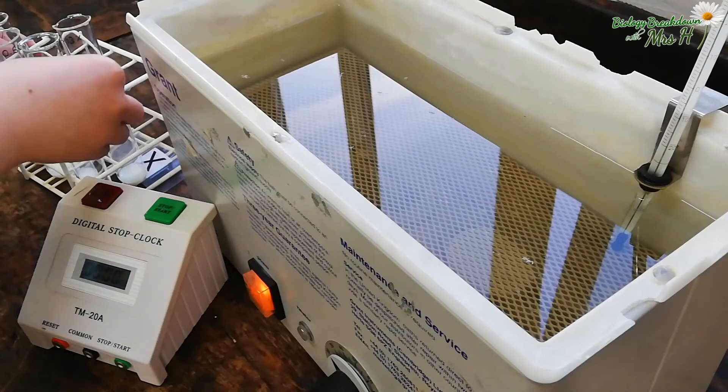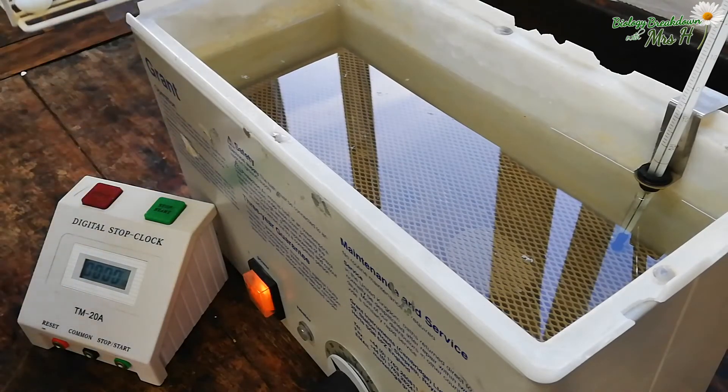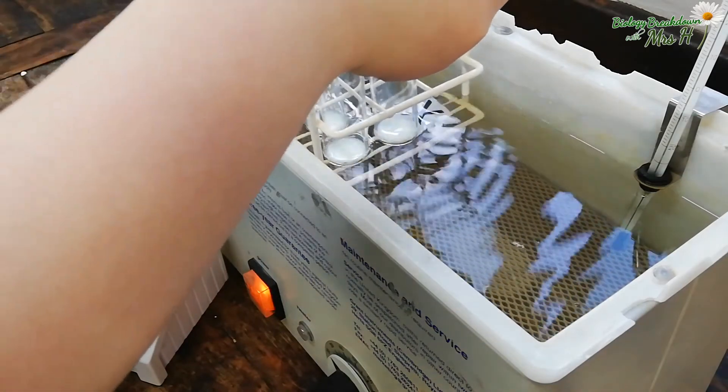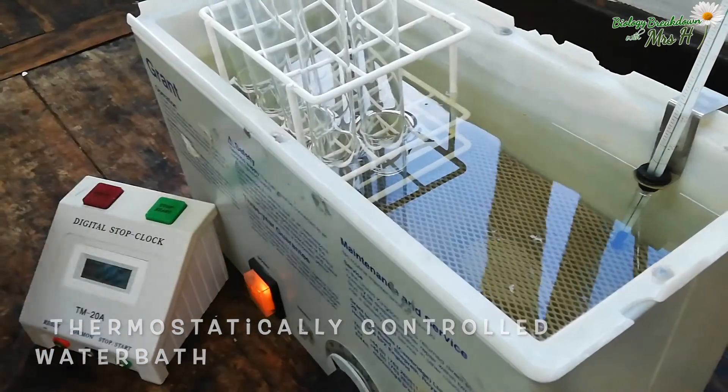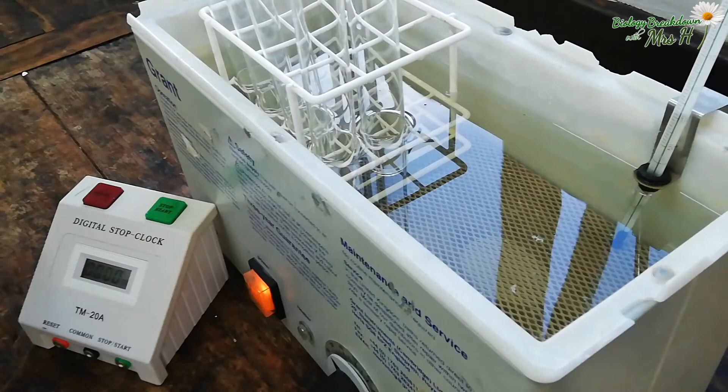The temperature of the reaction needs to be controlled so we'll place the tubes containing the milk into a thermostatically controlled water bath and we'll put it around 30 degrees C so that the reaction doesn't take too long because we've only got one lesson to do this in.